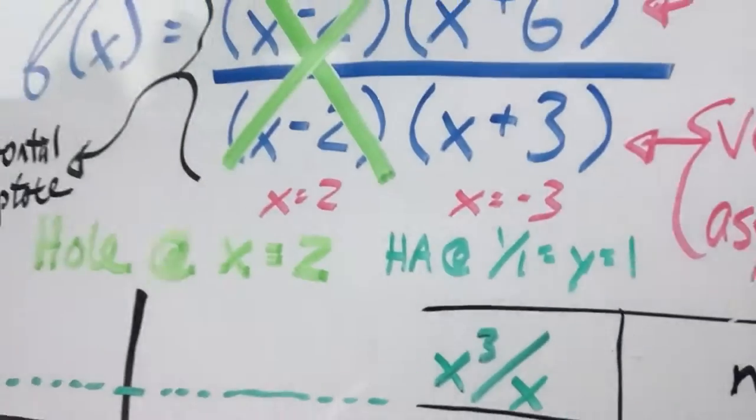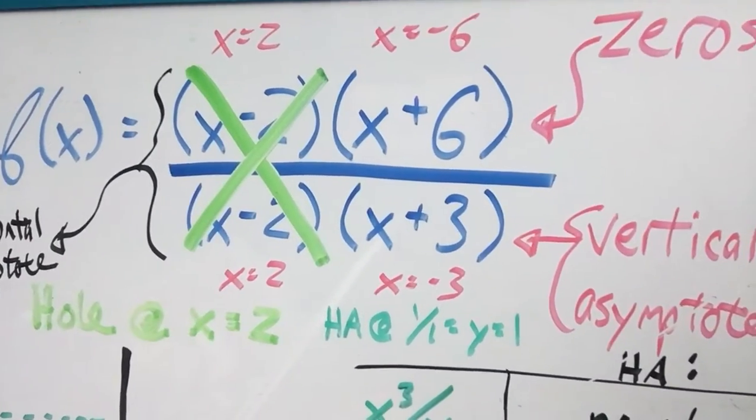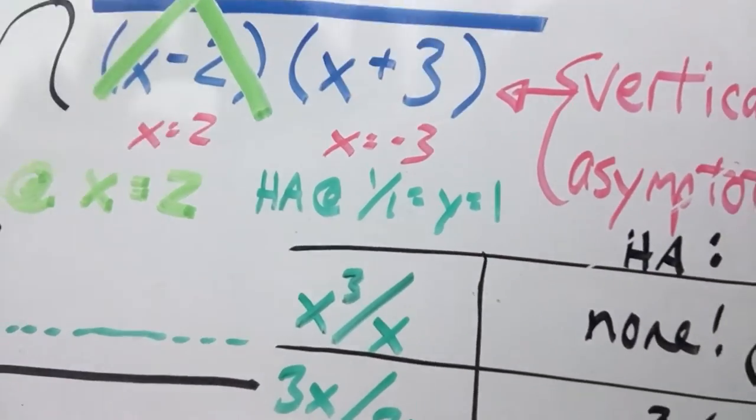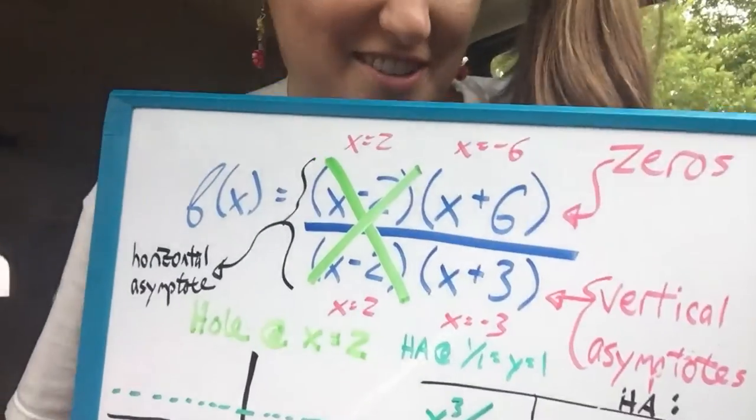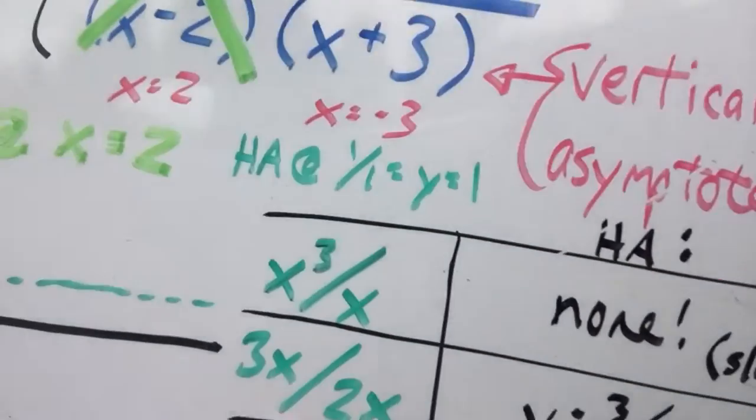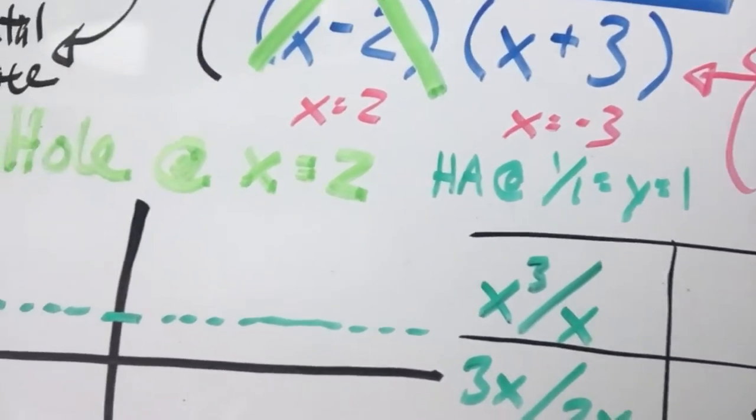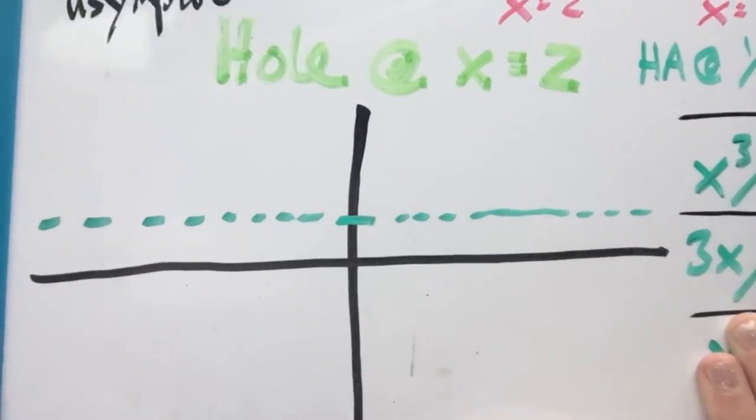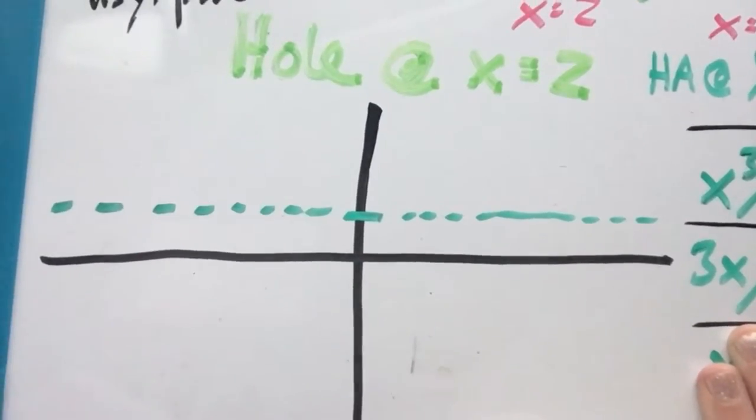So check it out. Since my original equation was equal degrees on top and bottom, then I'm going to just use the coefficients. I didn't put any coefficients on this one, so it's just 1 over 1, so y equals 1. I'm going to say there's a horizontal line, a horizontal asymptote at y equals 1.